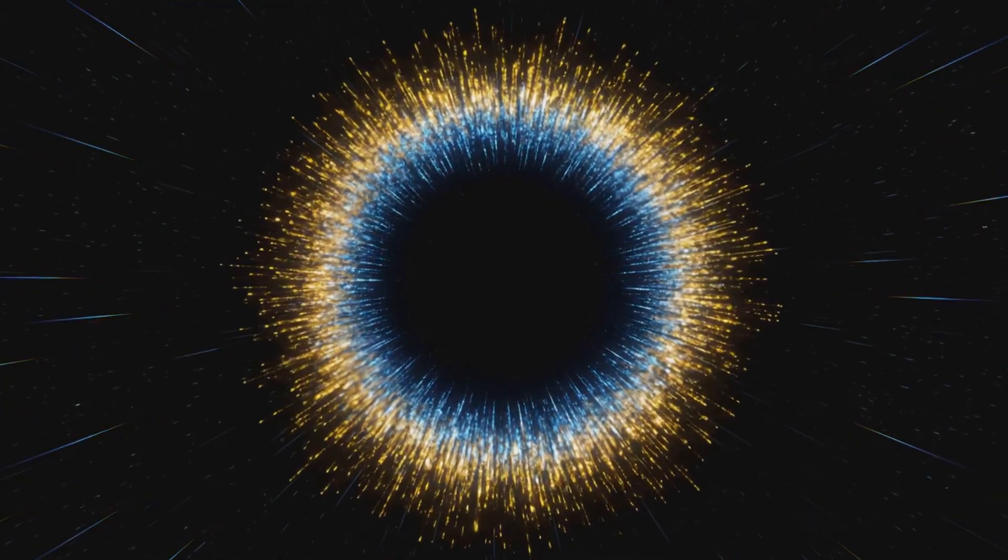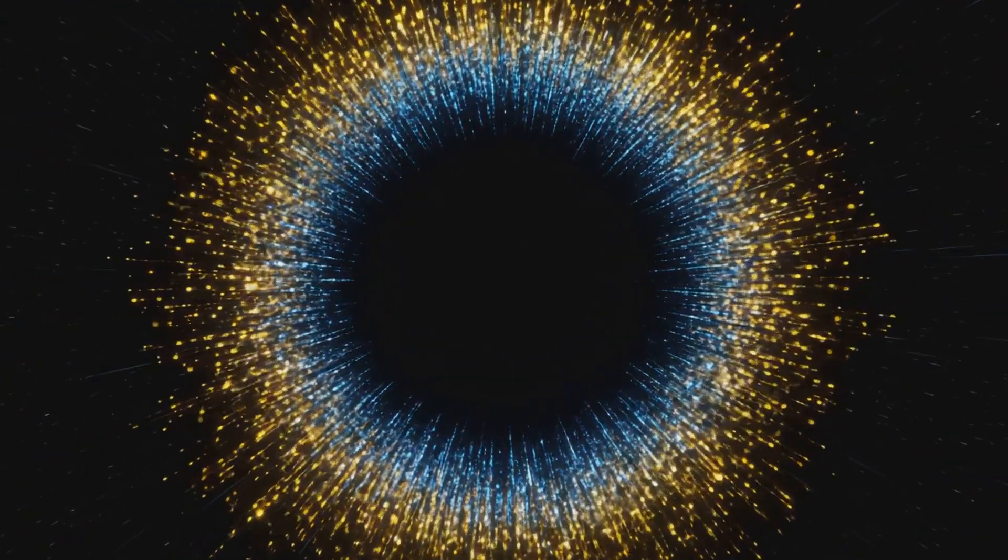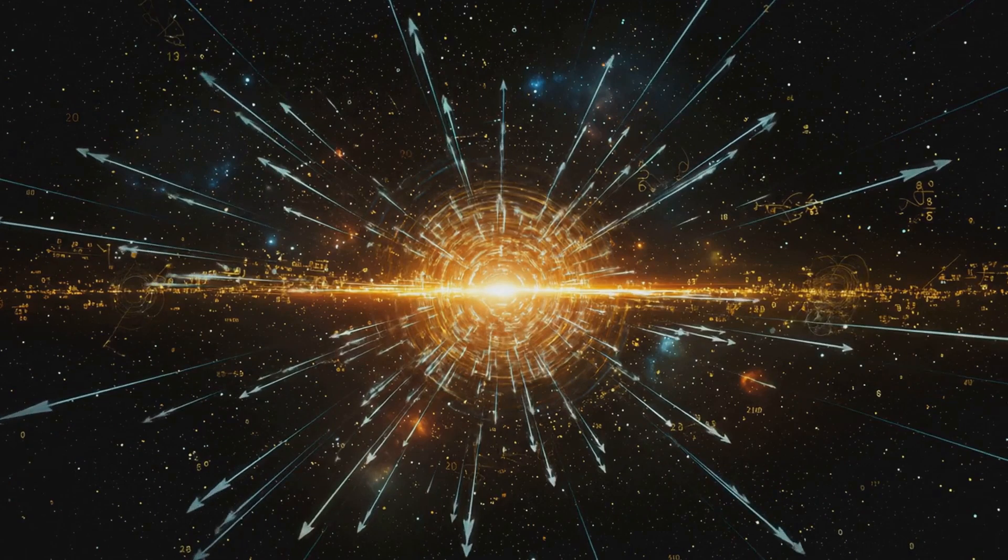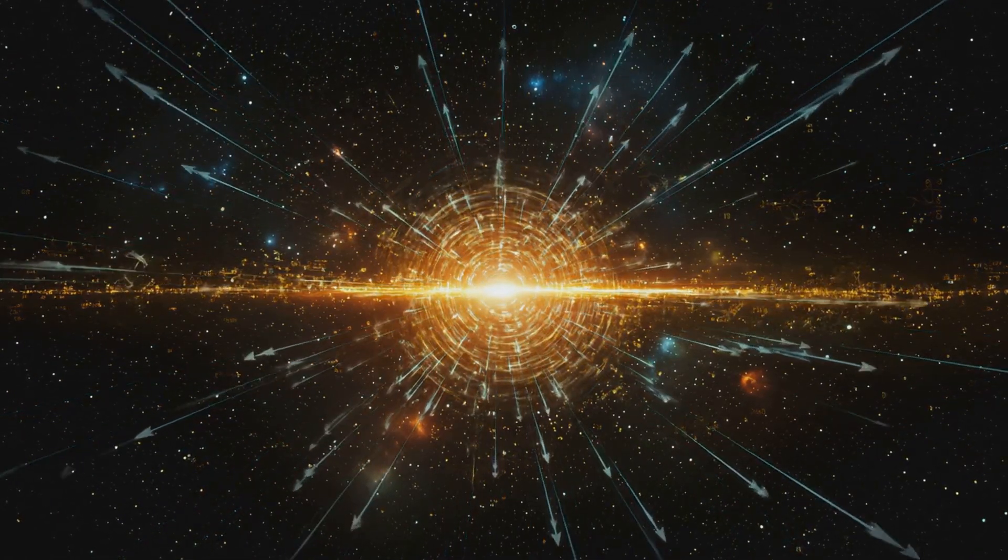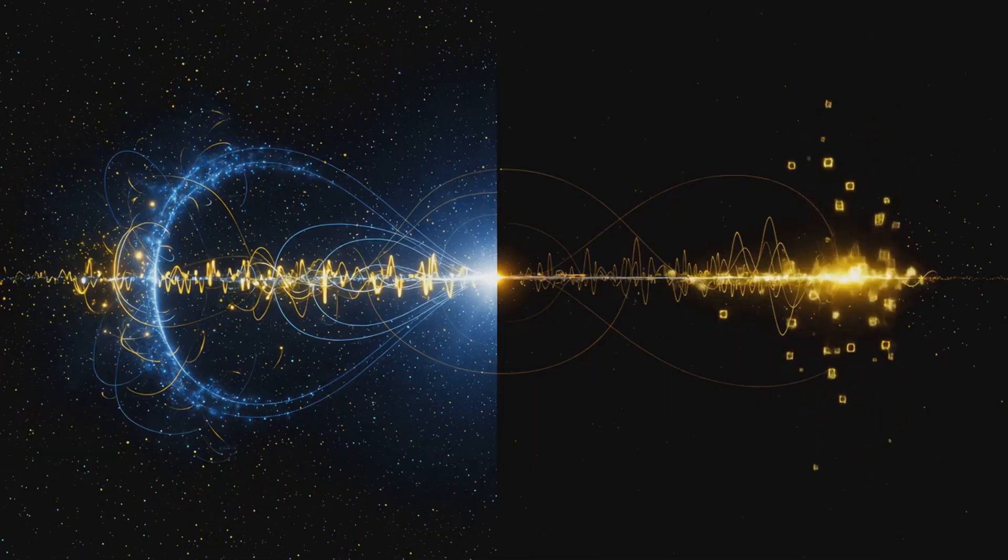The event horizon or the surface of a black hole is not a wall, but a screen. Not metaphorically, but literally. It is a holographic surface made of Planck scale qubits, the smallest meaningful units of information in the universe.